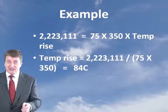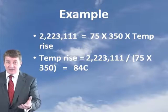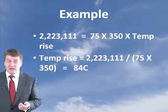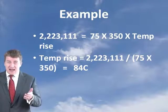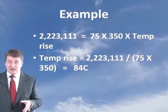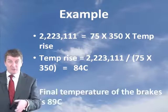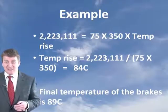That's your temperature rise — that's how much the brakes would heat up by: 84 degrees. The ambient temperature was 5 degrees, so the temperature of the brakes should be 89 degrees C. That's how you do it: you convert all the kinetic energy into heat energy and divide that by the mass times the specific heat capacity of the brakes.